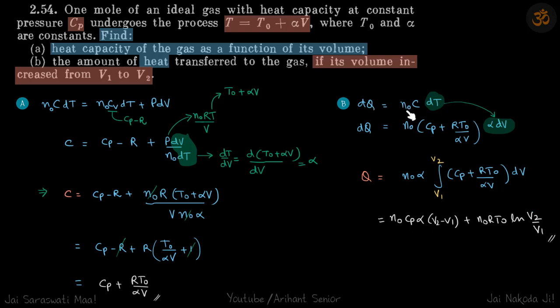So dQ is n0C dT. From here we know dT is alpha dV. So now we just integrate everything on the right as a function of volume, with limits from V1 to V2, and we'll get our answer.